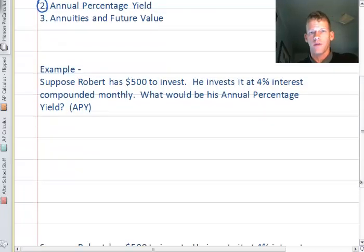We have Robert investing his $500 again, a familiar problem that we just did. And he invested 4% interest compounded monthly. So we set up two sides of the equation. We set up on one side, we know we have the $500 and we're investing it.